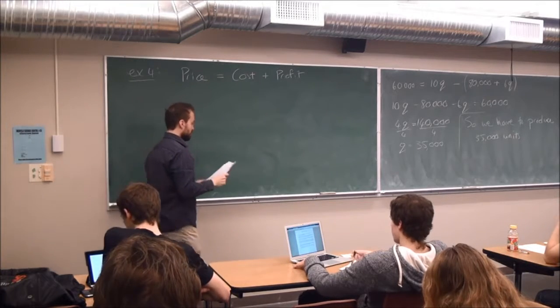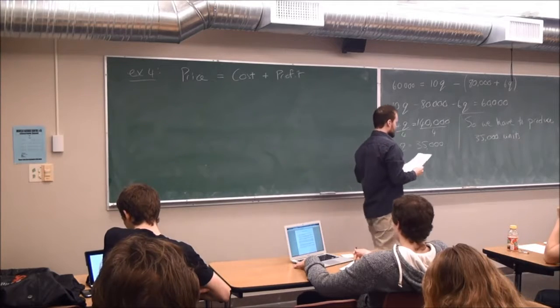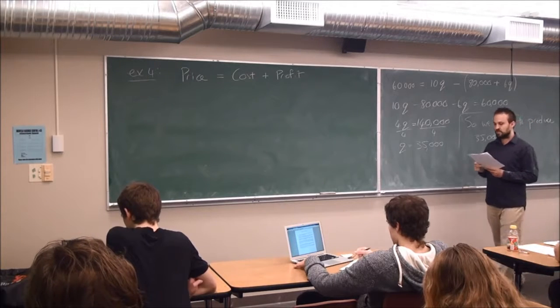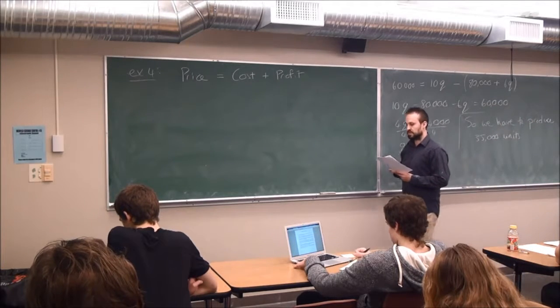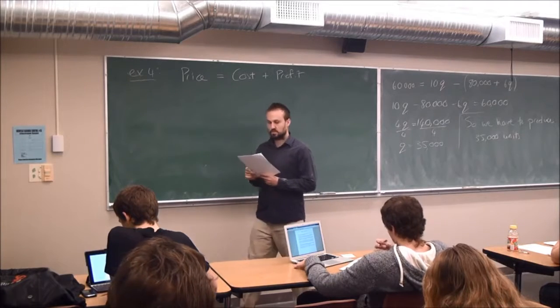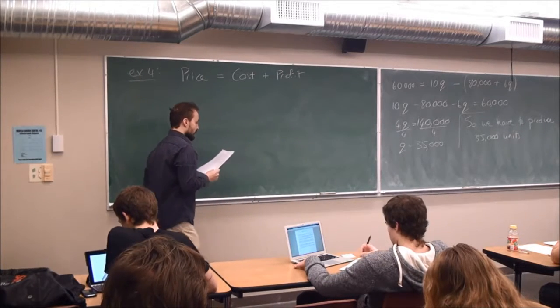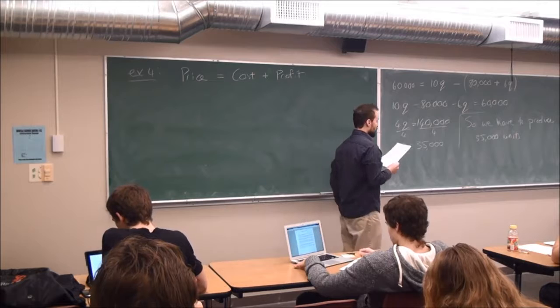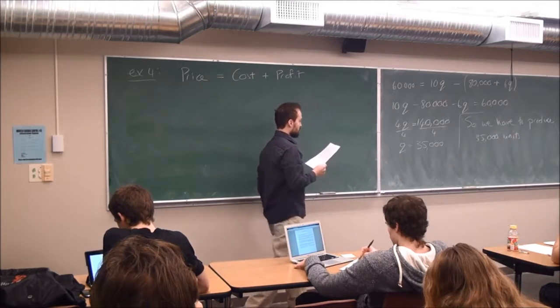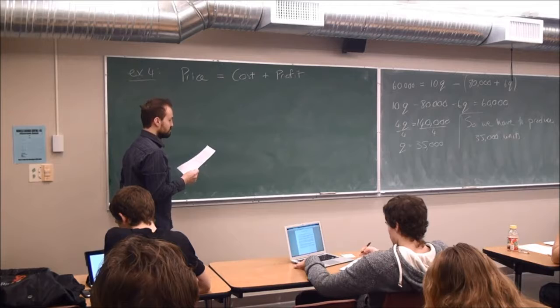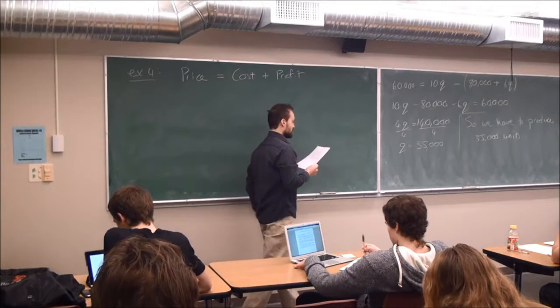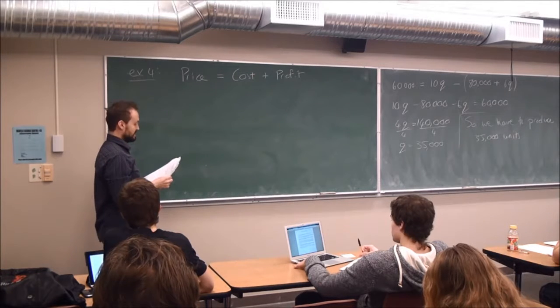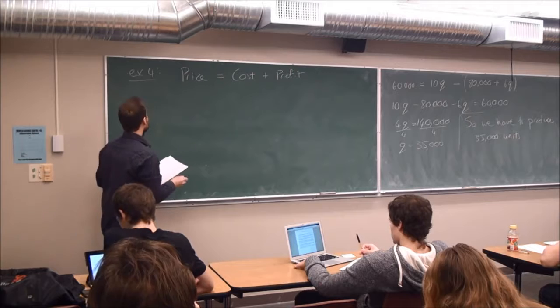So let's read number four. Sportcraft manufactures denim clothing and is planning to sell its new line of jeans to retail outlets. The cost to the retailer will be $60 per pair. As a convenience to the retailer, Sportcraft will attach a price tag to each pair. What amount should be marked on the price tag so that the retailer can reduce this price by 20% during the sale and still make a profit of 15% of the cost? That's confusing. So let's just one step at a time.